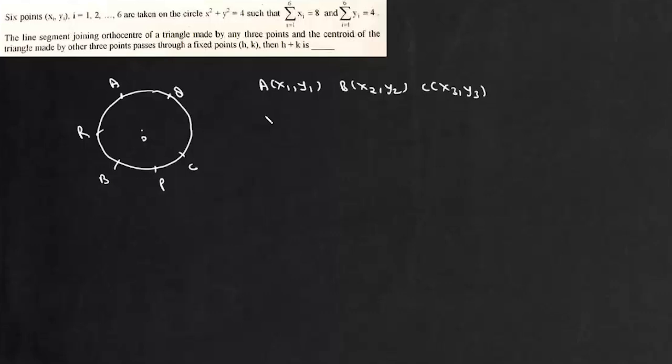And this PQR is suppose x4, y4, x5, y5, and x6, y6.